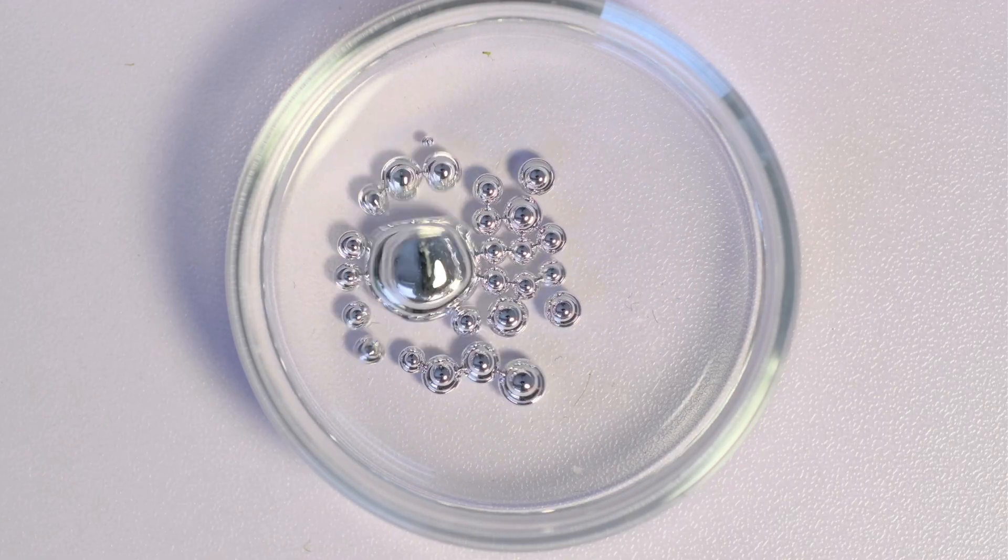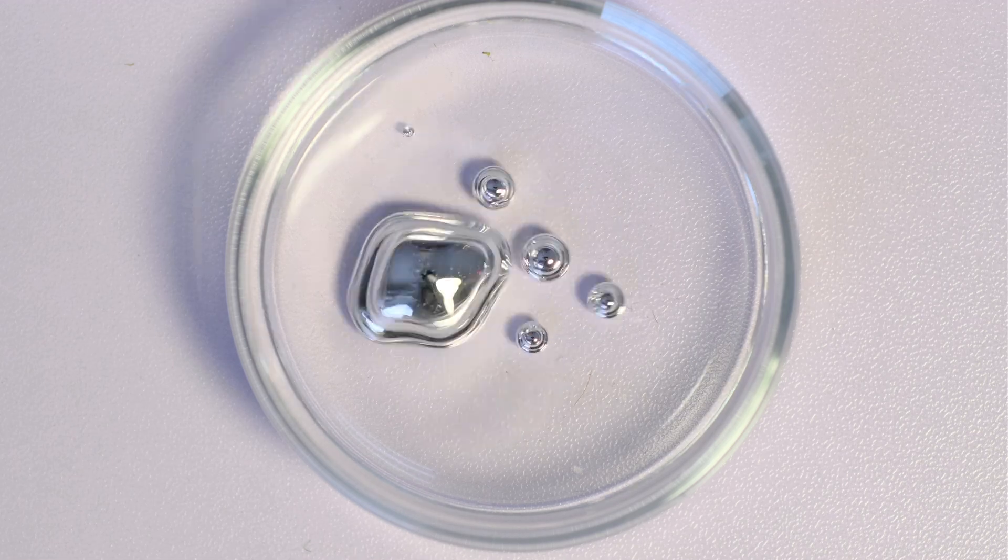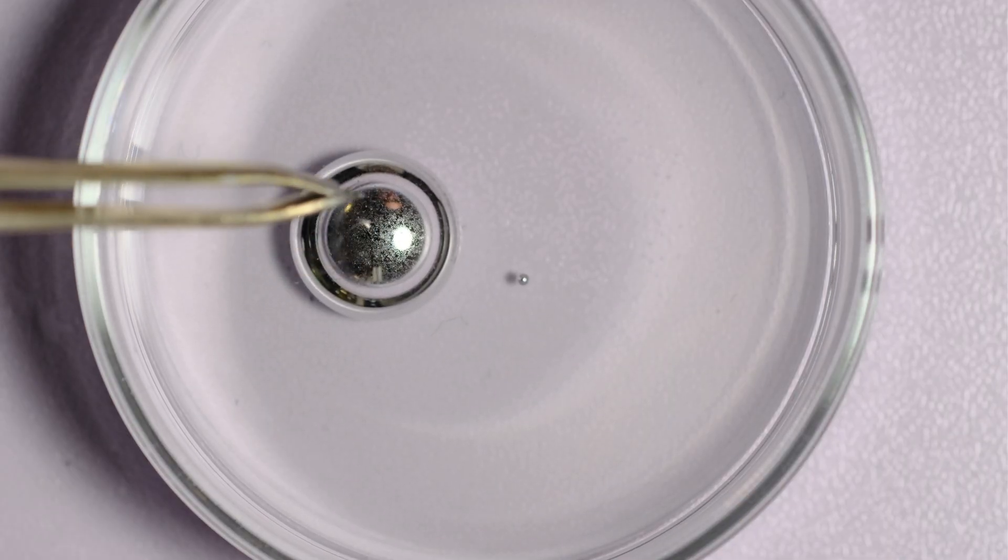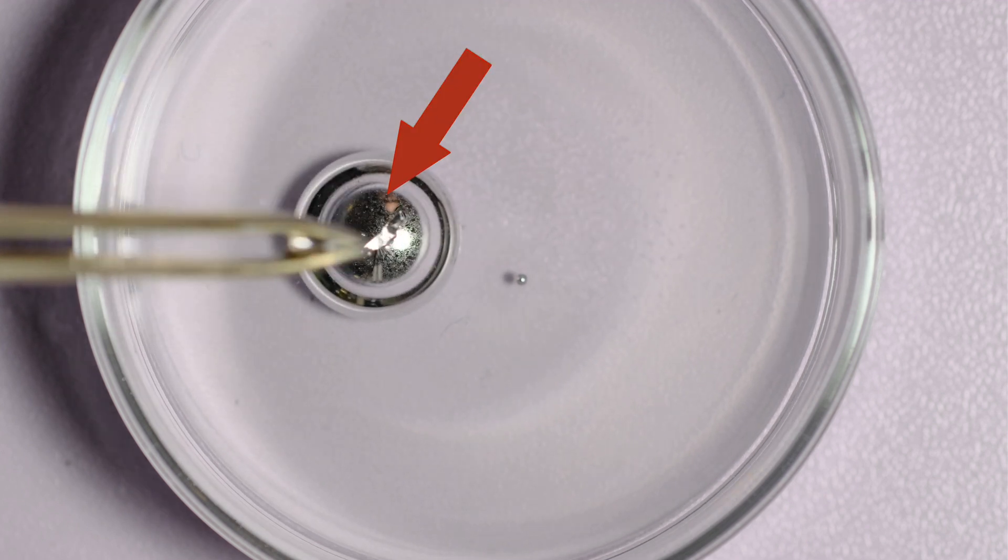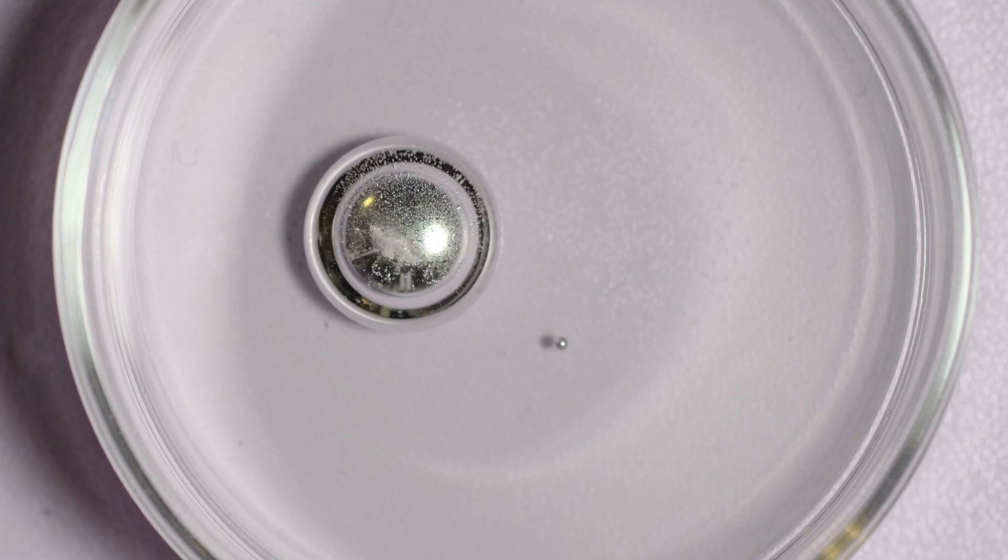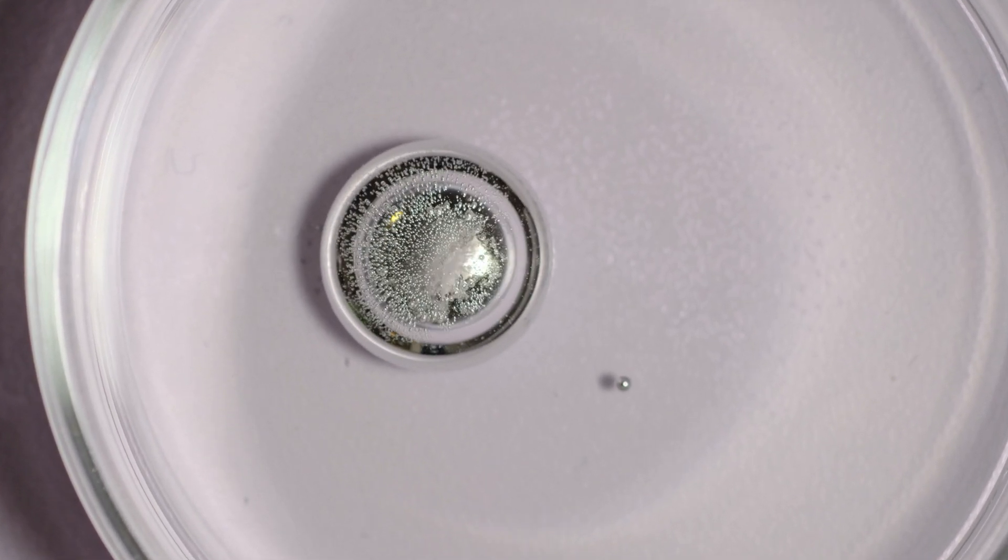Here is a short overview of how the experiment works. A droplet of galistan is infused with a tiny aluminum flake in a petri dish containing electrolyte. The gallium weakens the aluminum and it starts to react with the alkaline electrolyte.